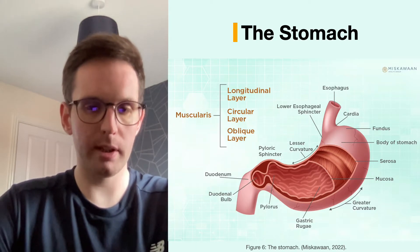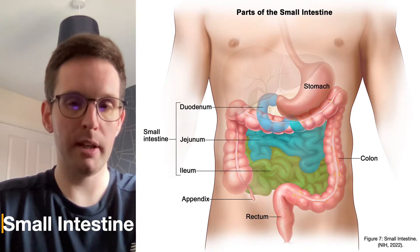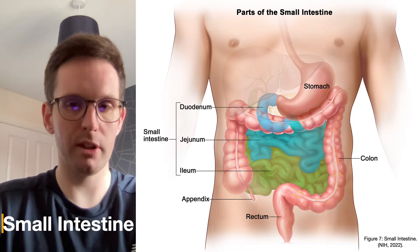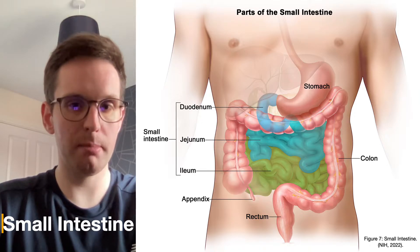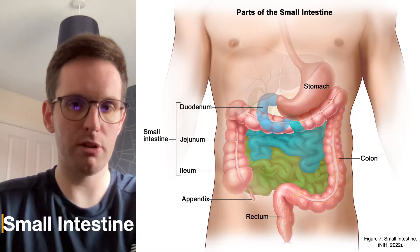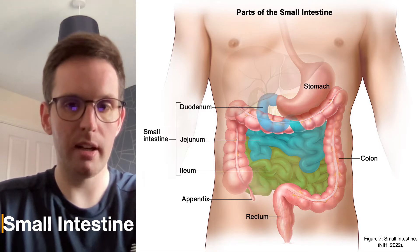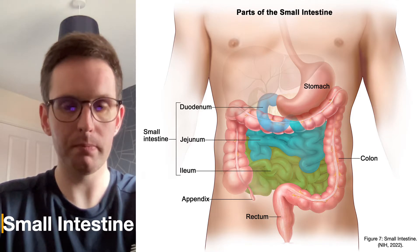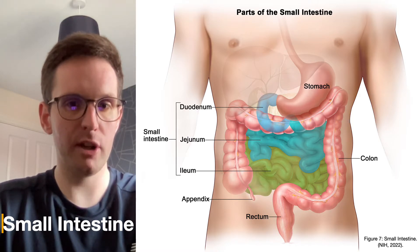The pylorus will then force the chyme into the duodenum, passing the pyloric sphincter. The small intestine's function is to complete the chemical and mechanical breakdown of chyme and absorb the extracted nutrients. This is achieved through mechanical parasympathetic stimulation and the secretion of bile, pancreatic, and intestinal juices. The small intestine's structure is lined with many epithelial villi that create a large surface area aiding nutrient absorption. The small intestine is split into three parts: the duodenum, the jejunum, and the ileum.